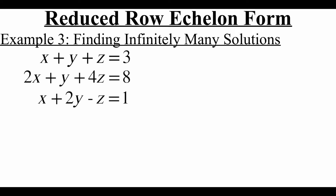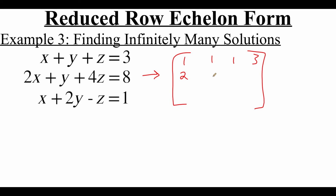Now in this example I'm going to show you what finding infinitely many solutions looks like for a three-variable system. We're going to take this system of equations and turn it into an augmented matrix — looking just at the numbers. The top row is one, one, one, three. The second row is two, one, four, eight. And the bottom row is one, two, negative one, one. We're working towards reduced row echelon form, but first we have to put this matrix in row echelon form.